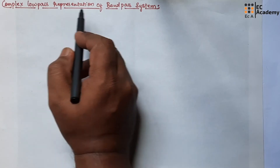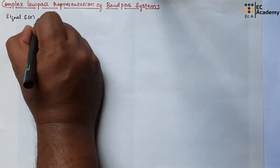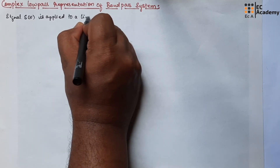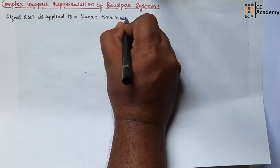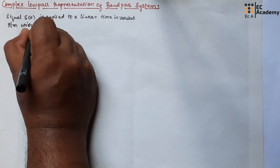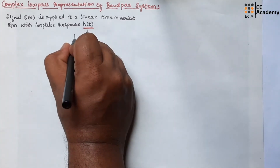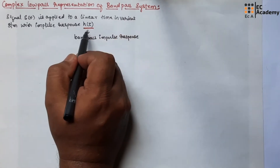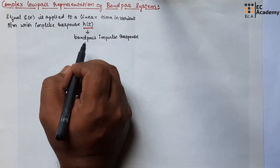Here we will use low pass representation for band pass systems. Let us consider a signal S of t which is applied to a linear time invariant system with impulse response H of t. This H of t is known as the band pass impulse response. Now let us represent H of t in terms of quadrature low pass components HI of t and HQ of t.